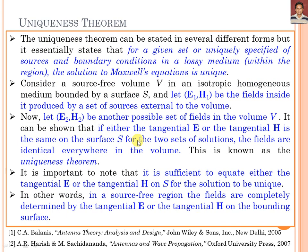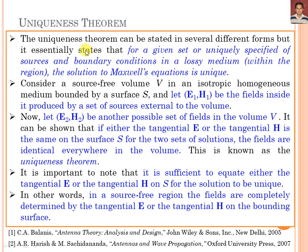Then we are going to discuss about the uniqueness theorem. The uniqueness theorem can be stated in several different forms, but it is essentially stated that for a given set of sources — uniquely specified by the sources and boundary conditions in a lossy medium within the region — the solution of Maxwell's equations is unique. The boundary conditions here are the tangential electric field or tangential magnetic field.